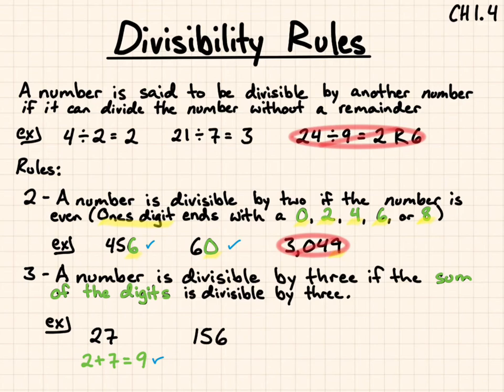156, 1 plus 5 plus 6 is 12, and I know that 12 is divisible by 3 because 1 plus 2, you could keep going with this, 1 plus 2 is 3, and 3 is divisible by 3. So 156 is divisible by 3.